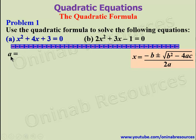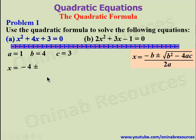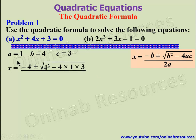From part a, our a — the coefficient of x squared — is 1. Our b, the coefficient of x, is positive 4, and the constant c is 3. We substitute a, b, and c into the quadratic formula, so x equals negative 4 plus or minus the square root of 4 squared minus 4 times 1 times 3, everything over 2 times 1. We go ahead to simplify.